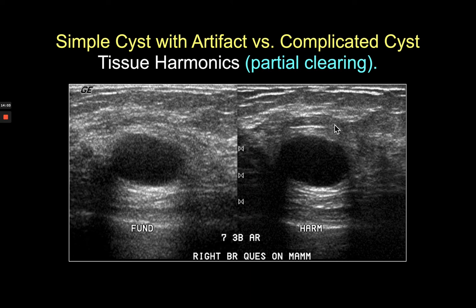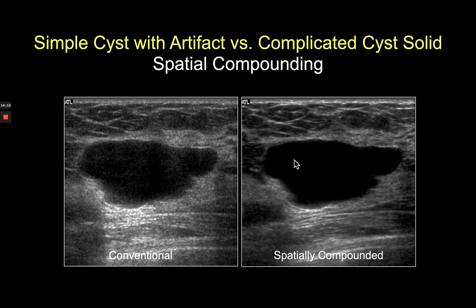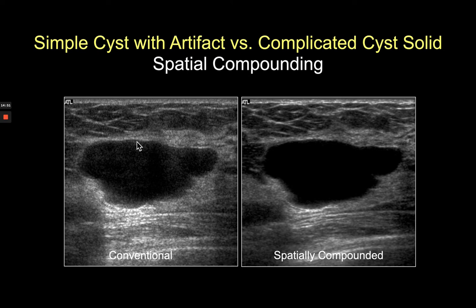Split-screen images show a complicated cyst with fundamental imaging on the left and harmonics on the right — harmonics clears most internal artifacts. Spatial compounding similarly clears clutter artifact from the cyst. In the old days, only high-end machines had harmonics or spatial compounding. Now even mid-range and lower-end machines can have both. My default presets for breast ultrasound always include spatial compounding and tissue harmonics.